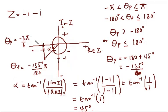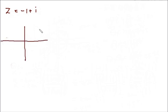Let's take another example. Say we have a complex number z equals minus 1 plus i. First of all, we'll draw our Argand diagram. The Argand diagram looks like this, with the positive part of the imaginary part and the positive part of the real part shown.